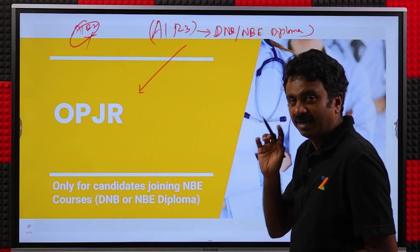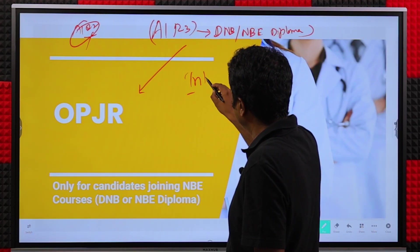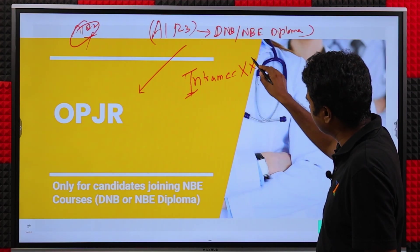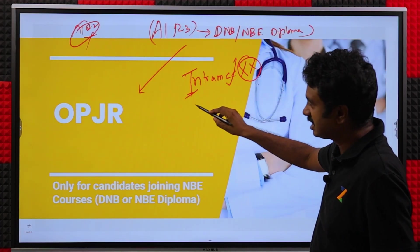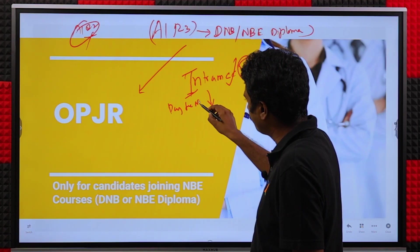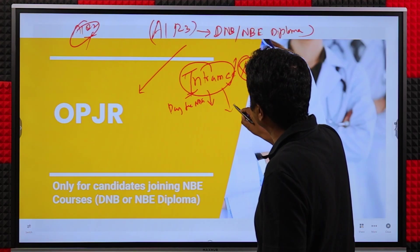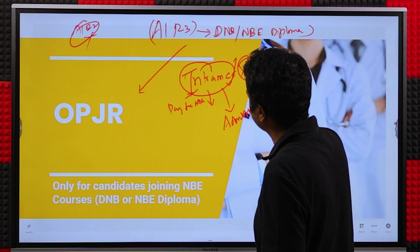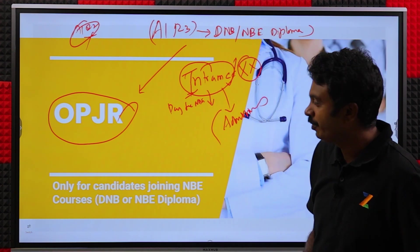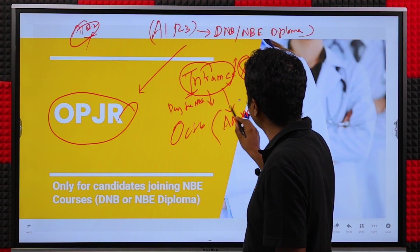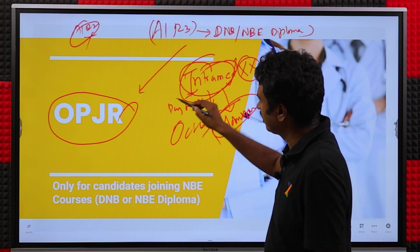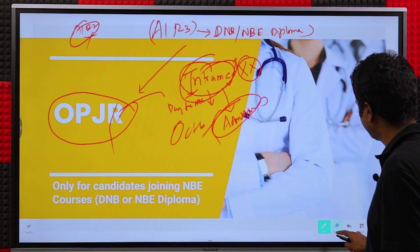First things first — IntraMCC is your admission portal, and this is the critical part. You need to ensure that everything is done in IntraMCC. Before that, paying the fee to NBE through OPJR and completing and getting the IntraMCC admission letter is the primary thing that needs to be done. OPJR is a secondary process which can be completed later, up to October 6th. Get your IntraMCC admission letter. Even if OPJR doesn't function and you are not able to pay the fee somehow, get your IntraMCC admission letter — everything else can be done later.